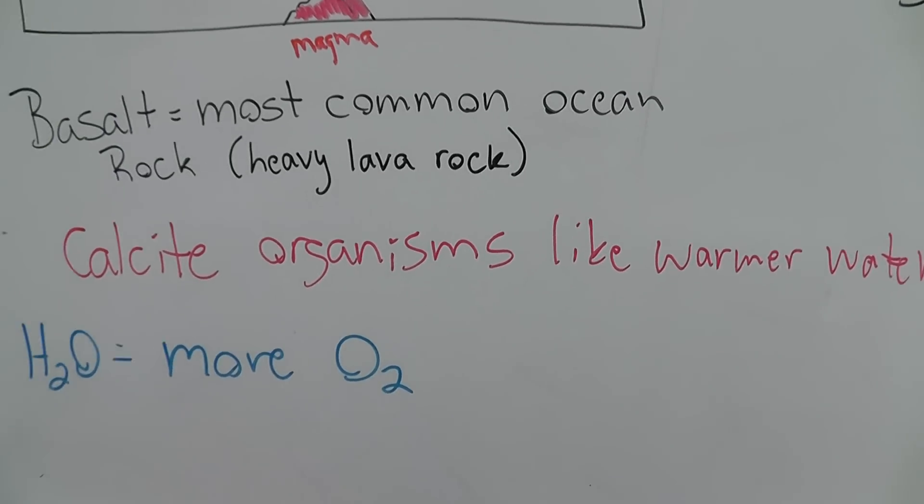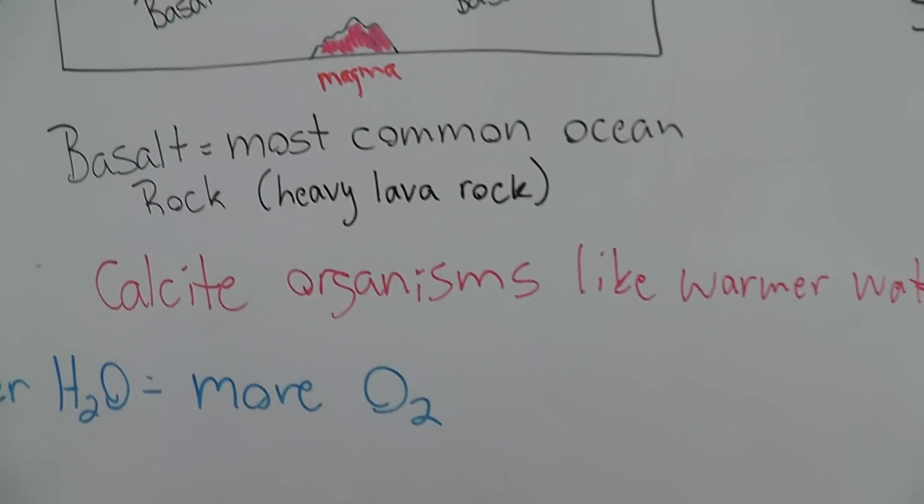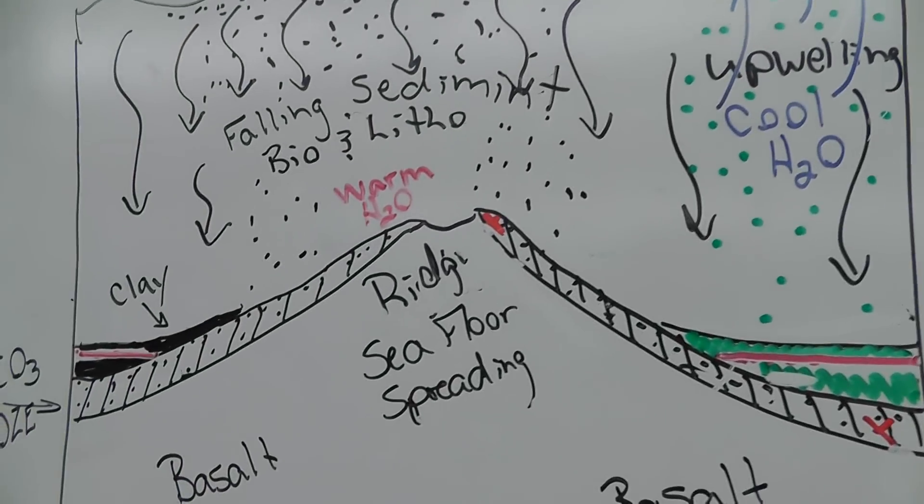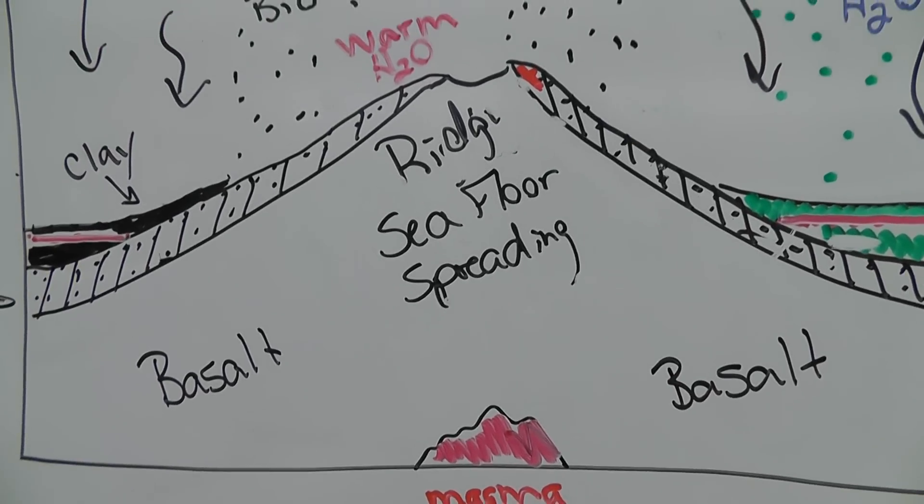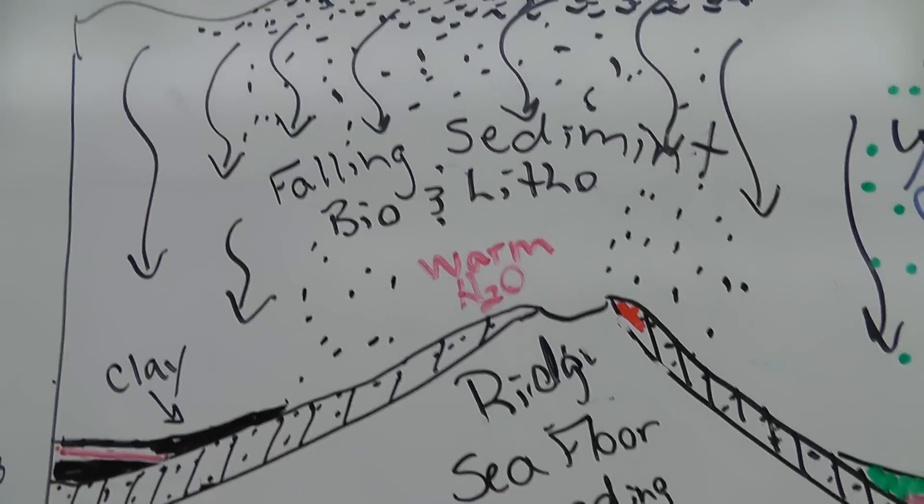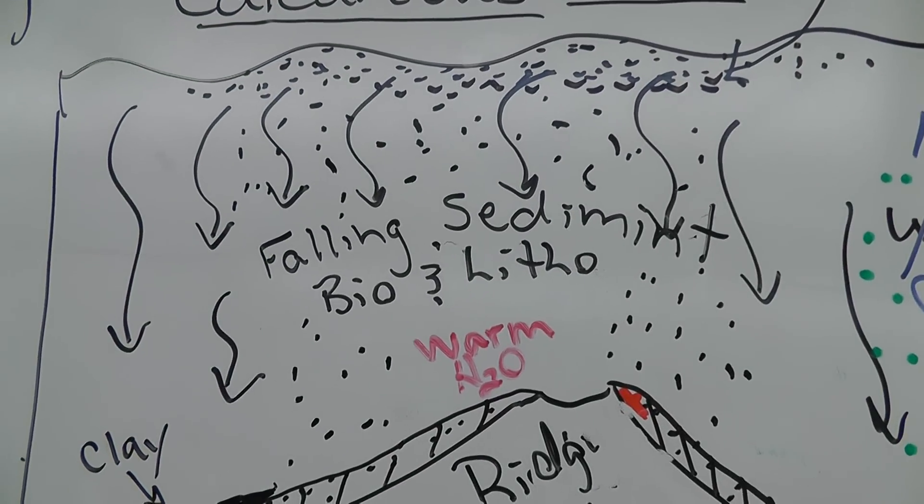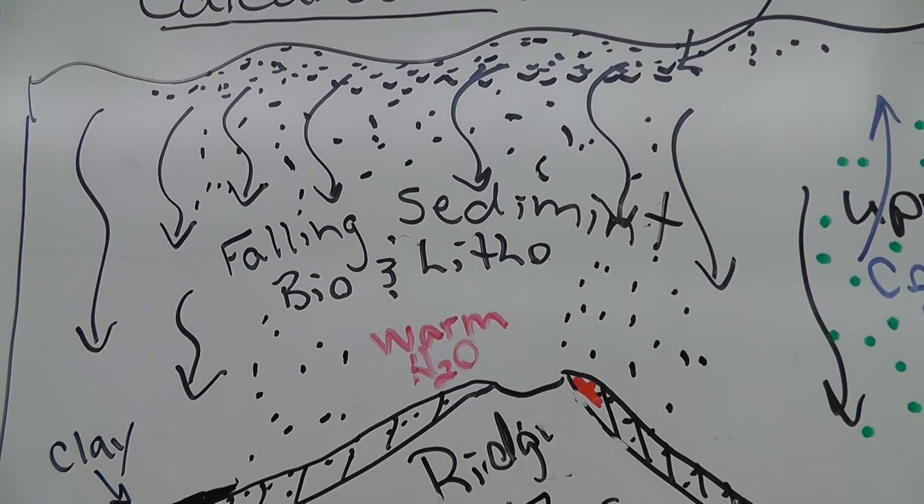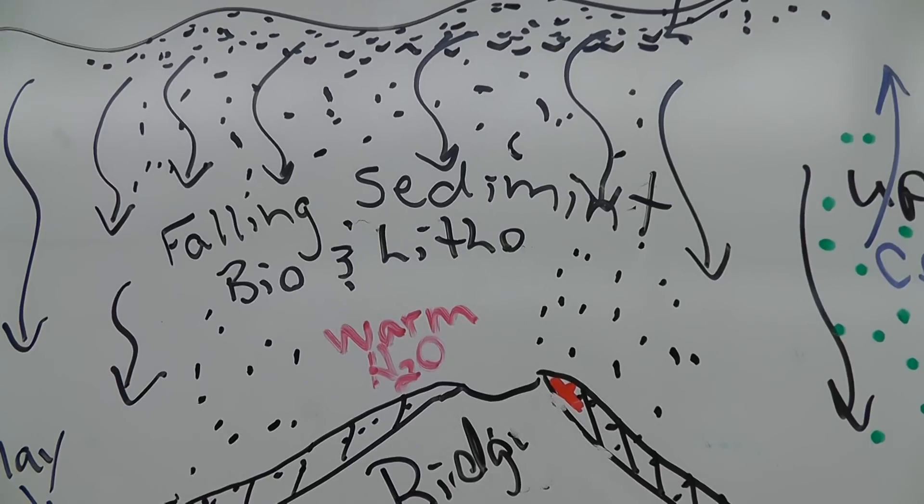Well calcite producing organisms like warmer water. So they're going to like water that is in areas where there's going to be some kind of magma or volcano because that magma or volcano warms the water around it. And since calcite producing organisms like warm water they're going to thrive in that area.